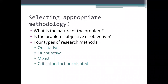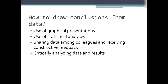How do we select the appropriate methodology? We have to look at the nature of the problem — is it subjective or objective? If we have a subjective problem it's going to be harder to research. For example: 'The Patriots are the worst football team in the world' — that's a subjective problem. It'll be really hard to prove, and even if you did, somebody else may say they're the best team. There are four types of research: quantitative, qualitative, mixed, and criterion.